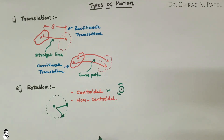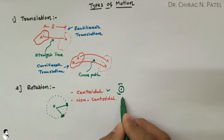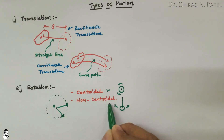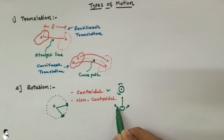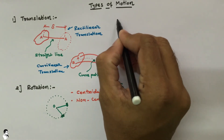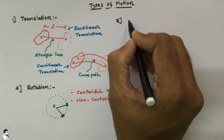For non-centroidal rotation, take the example of a pendulum. The pendulum has a fixed point but it moves in one direction as well as the other direction; however, it does not provide a complete revolution with some fixed radius. So that is called non-centroidal rotation.